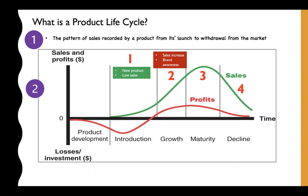In stage two, if it is a normal product in terms of its life cycle, sales are expected to slowly increase. This is because the business is spending more money to create branding and awareness to the public, so that more people know about the product and more of them would try to buy it. This correlates to sales increasing.